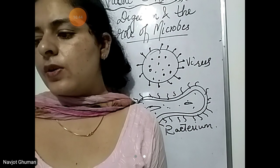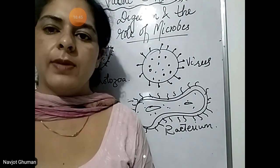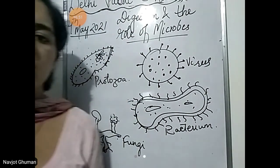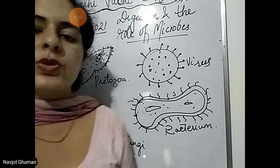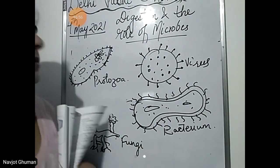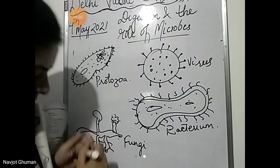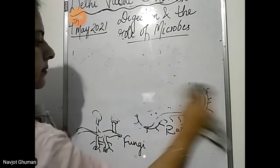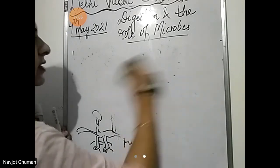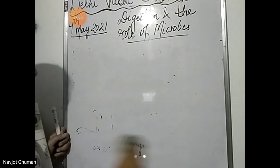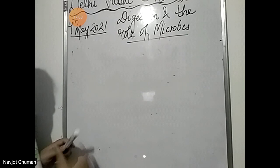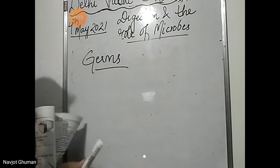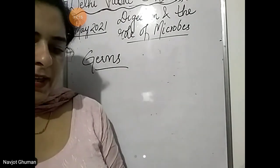Harmful microbes are called germs. Now we have read about the useful microbes; now we will read about the harmful microbes. The harmful microbes are called germs — that is the name given to them. They cause diseases in our body.